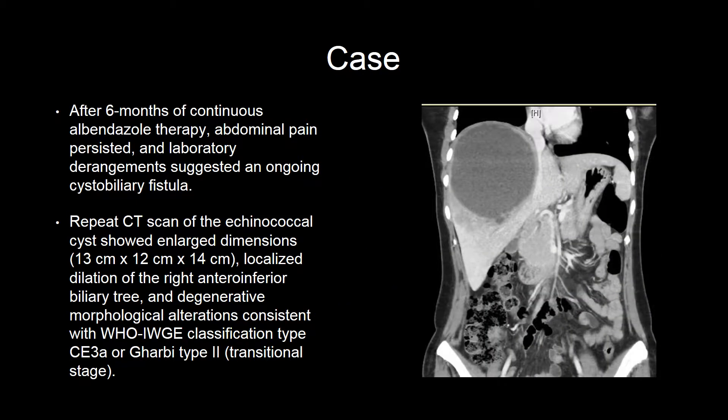After six months of continuous albendazole therapy, abdominal pain persisted and laboratory derangements suggested an ongoing cystobiliary fistula. Repeat CT scan of the echinococcal cyst showed enlarged dimensions, localized dilation of the right antero-inferior biliary tree, and degenerative morphological alterations consistent with Hu-IWGE classification type CE3A, or Garby classification type 2. This is a transitional stage echinococcal cyst.